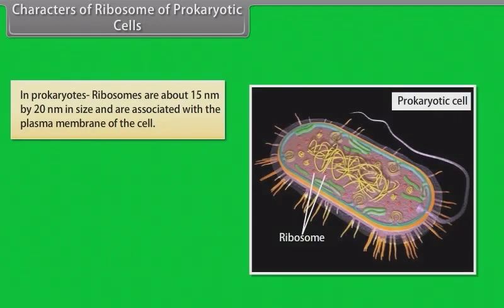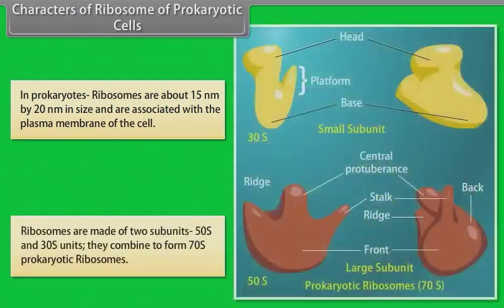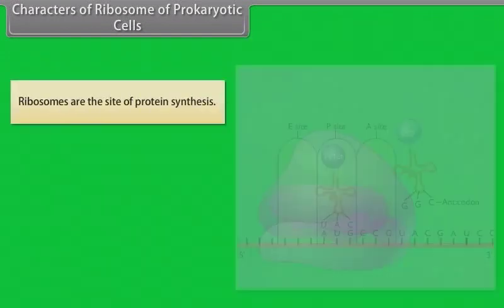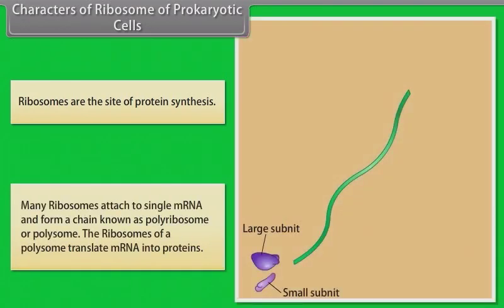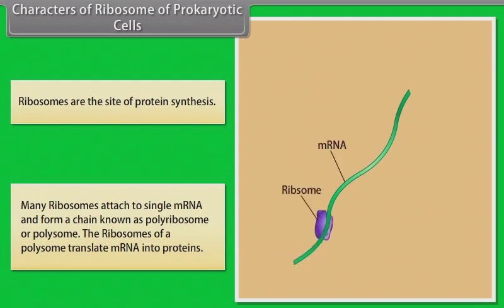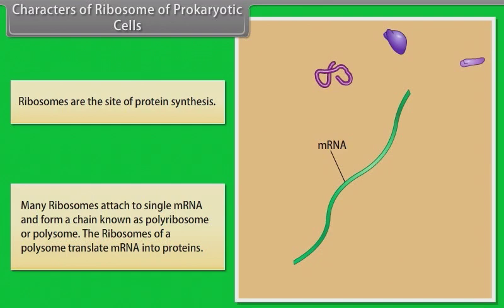In prokaryotes, ribosomes are about 15 nm by 20 nm in size and are associated with the plasma membrane of the cell. Ribosomes are made up of two subunits, 50S and 30S, which combine to form 70S prokaryotic ribosomes. Ribosomes are the site of protein synthesis. Many ribosomes attach to a single mRNA and form a chain known as polyribosome or polysome, which translates mRNA into proteins.